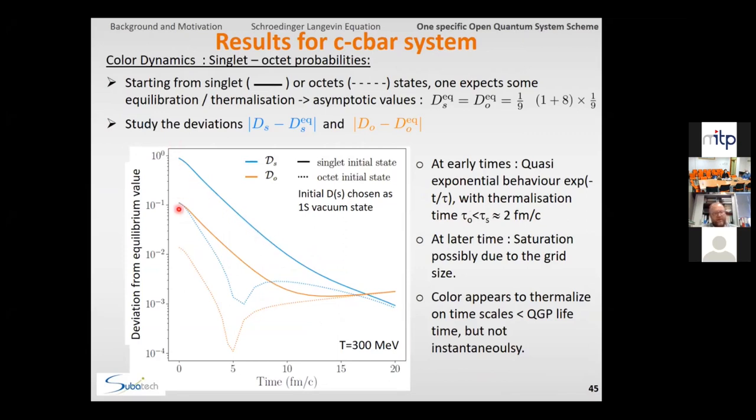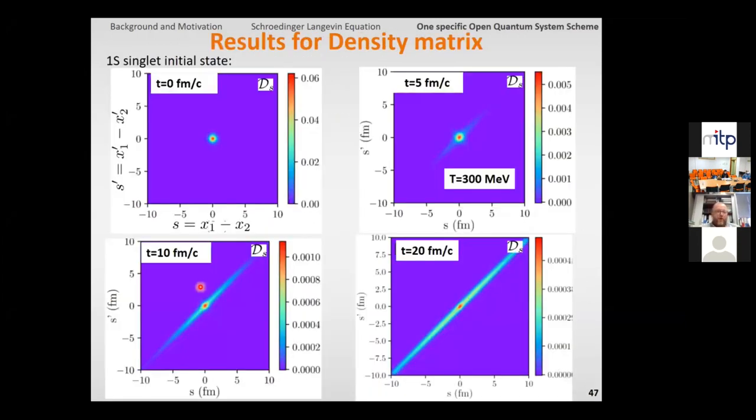the first thing that we checked is how the color is equilibrated, starting either from a singlet or an octet state, and looking at the deviation with respect to the equilibrium value from the color, one can see a very fast decrease to equilibrium behavior, and basically we converge towards the equilibration value, in typically with some exponential decrease and faster decrease here when we start from the octet state.